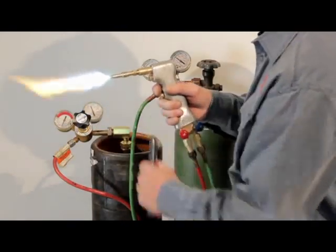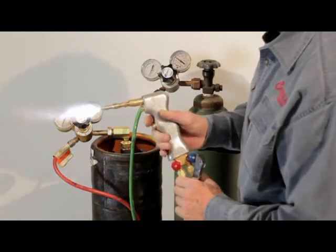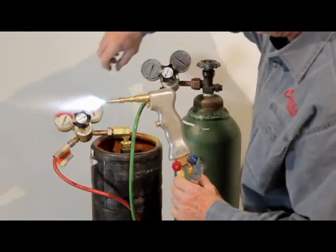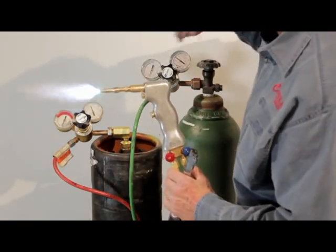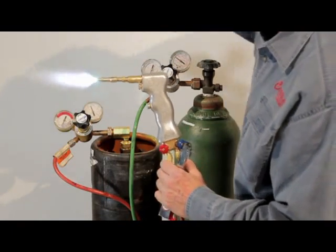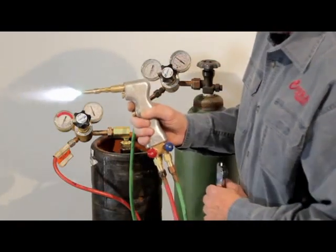Now you should be reading four pounds each on those gauges. If you have to adjust it at all, you can just barely touch it. But you've got four pounds and four pounds. That's all you need to weld with this gun.